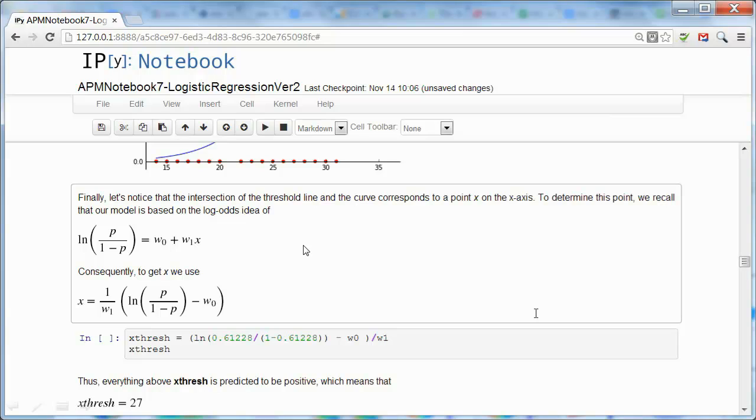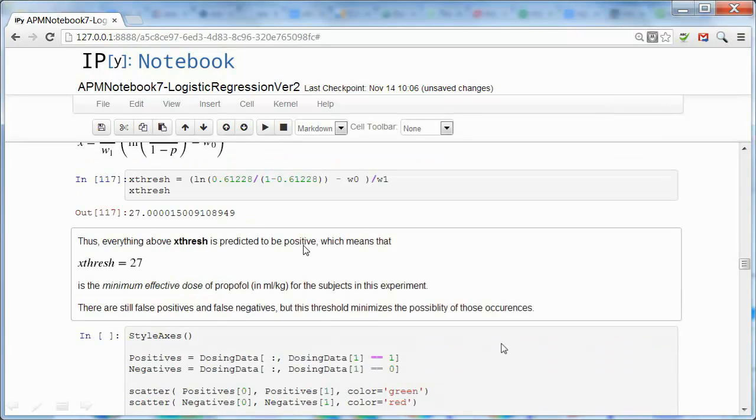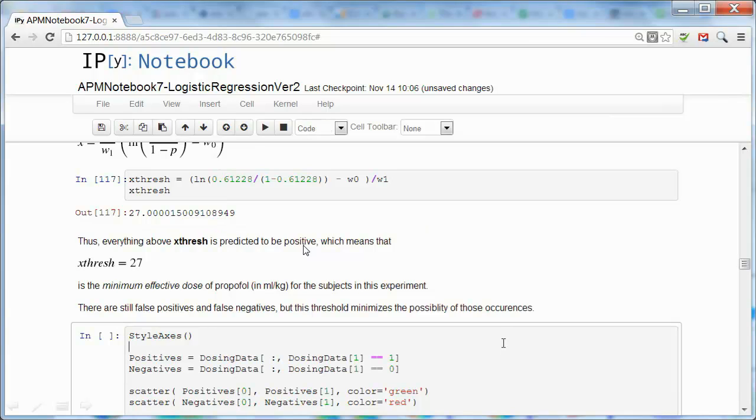We can also find the x because we used a logit model. So the log odds is linear. So we can solve for the x, apply that formula, and we get 27. So everything above 27 will be classified as positive.